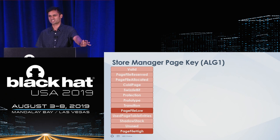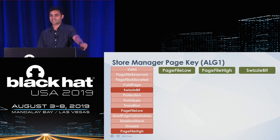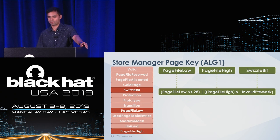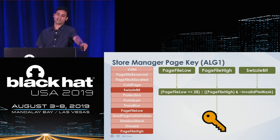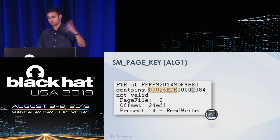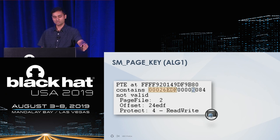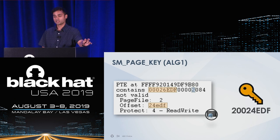The software PTE structure got a new field called the swizzle bit. The new algorithm says: if the swizzle bit is clear, perform this updated operation using the invalid PTE mask from another memory manager structure; otherwise, use the previously specified algorithm. For example, if page file high is hex 26EDF, the Windows debugger parses it and says it's actually 24EDF after checking the swizzle bit. As a result, we get an SMK page key of 200024EDF instead of 200026EDF.